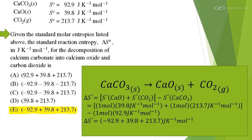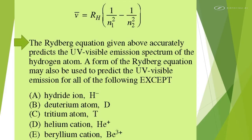The Rydberg equation given above accurately predicts the UV-visible emission spectrum of the hydrogen atom. A form of the Rydberg equation may also be used to predict the UV-visible emission for all of the following except.